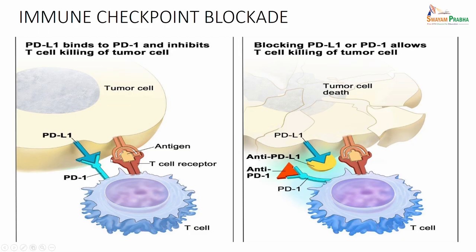This binding is preventing the immune killing. Now, we will see how to inhibit this binding. If there is a way to block this binding in the form of using an anti-PD-L1 or anti-PD-1 to block these receptors, then what happens is the T cell is able to identify the tumor cell and lead to its destruction. This is the whole concept - how we are going to use anti-PD-L1 or anti-PD-1 to inhibit this pathway.